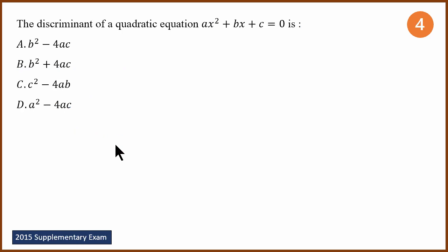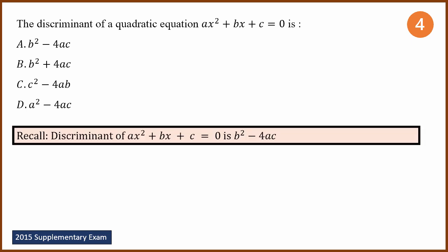Next is a definition question — they've asked what is the discriminant. We know that b squared minus 4ac is the discriminant. Hence the answer is A.